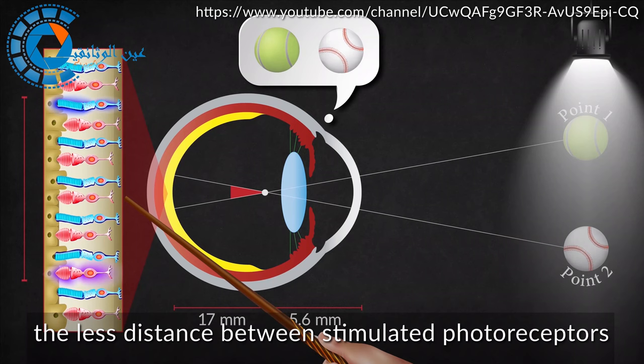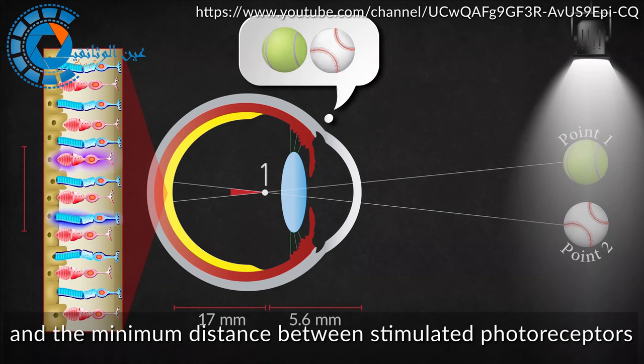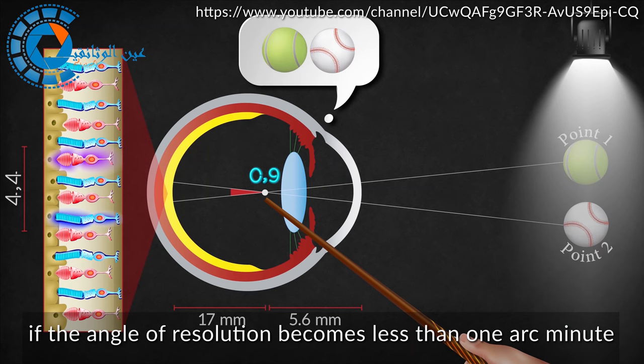While the less angle of resolution, the less distance between stimulated photoreceptors, so I realize there is decrease in the distance between separated points. The minimum angle of resolution equals 1 arc minute, and the minimal distance between stimulated photoreceptors is 4.5 micrometers.